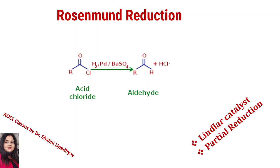What is the main point of the Rosenmund reduction reaction? These are the main questions asked in many competitive exams. First: what is the starting material? Acid chloride — RCOCl. What is the catalyst? This is also called the Rosenmund catalyst: H2/Pd-BaSO4. What is the poison? BaSO4 — or S — acts as the poison. What is the main catalyst? H2/Pd-BaSO4. What is the final product? Aldehyde is the final product.